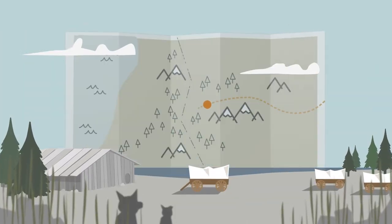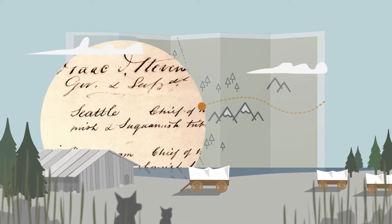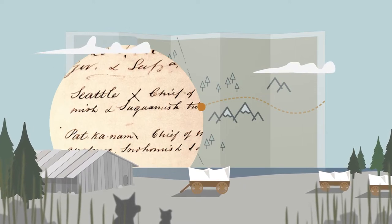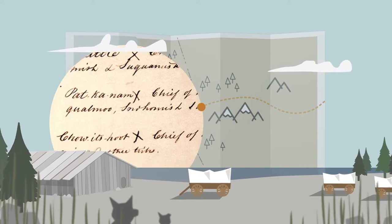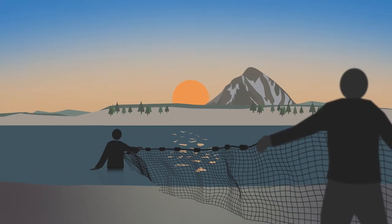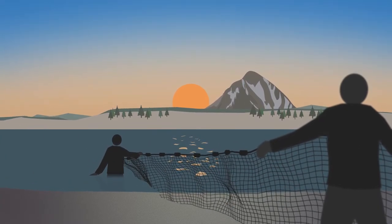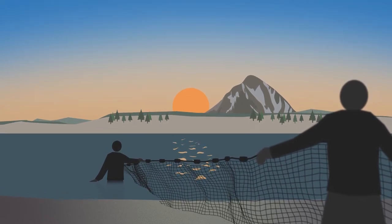Back when European settlers showed up here in Washington, Native Americans signed treaties and ceded their homelands in exchange for retaining a handful of rights. At the top of the list, the tribes reserved their right to fish, hunt, and gather in their usual and accustomed places.